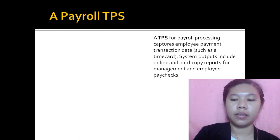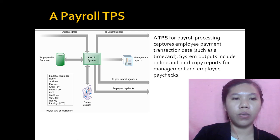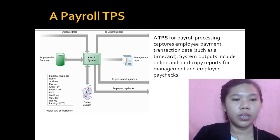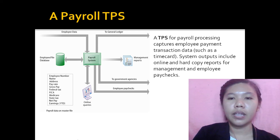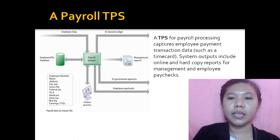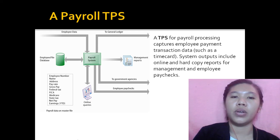Here is an example of a payroll TPS. There is employee data, an employee file, and employee information. A TPS for payroll processing captures employee payment transaction data such as time cards. System outputs include online and hard copy reports for management and employee paychecks.